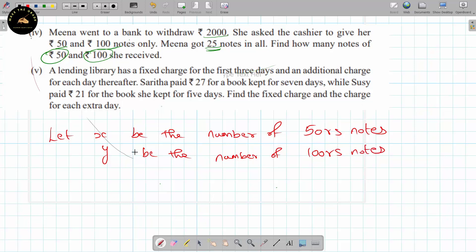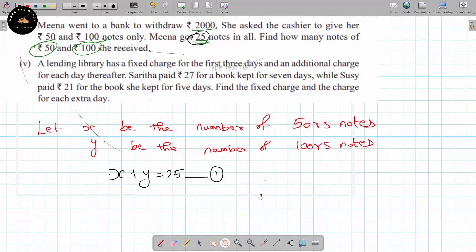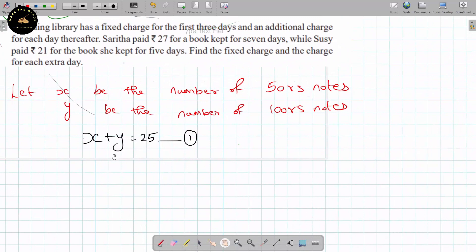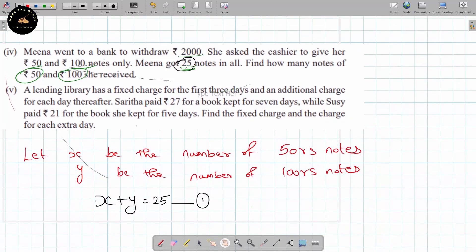So the number of notes: x plus y equals 25. This is equation 1.